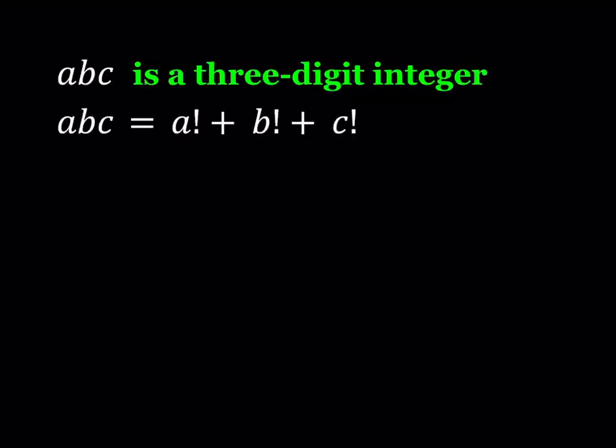So ABC are digits here, and this number is basically made up of its digits in a factorial way. These numbers are very special and they're very rare. We'll talk about that at the end.